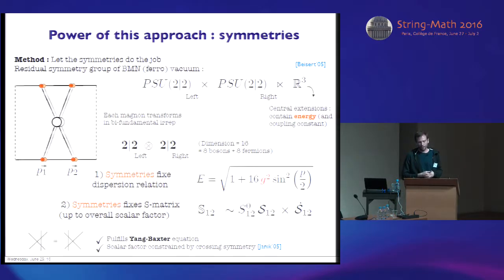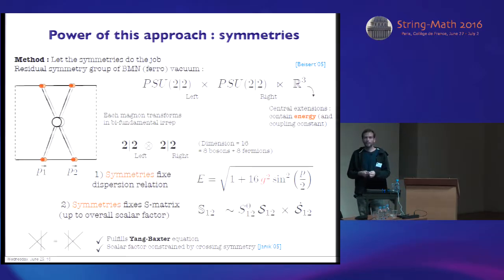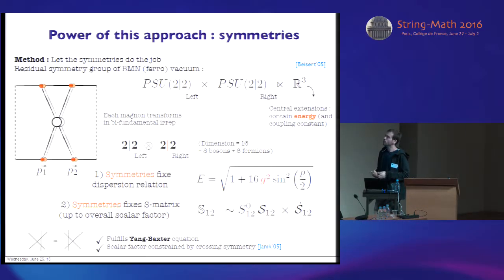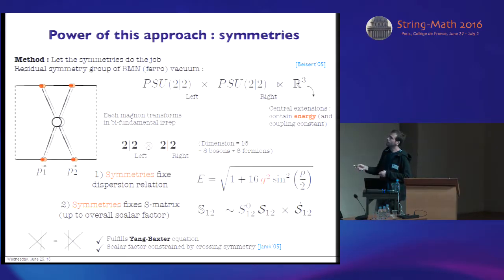And here we are helped by the supersymmetries. So this ferromagnetic vacuum that I've mentioned before happens to be a particular state. It's one of these BPS states — half BPS states that preserve half the total number of supersymmetry. And thanks to that, there are some residual supersymmetry on this spin chain or on this worldsheet.